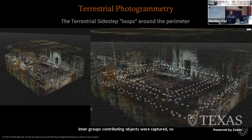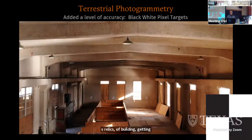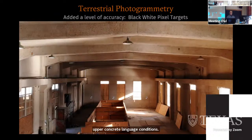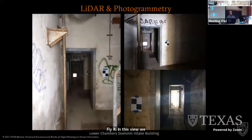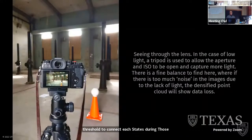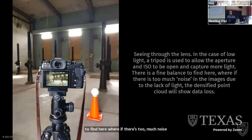Black pixel targets are used in 3D laser scanning and aerial and terrestrial photogrammetry to add accuracy. Seeing through the eyes of the drone, flying very close to the ceiling captured upper concrete ledge conditions not reachable by DSLR or laser scanner — when you cannot reach it, fly it. In the lower chambers of the Seaholm building, black pixel targets are placed at each threshold to connect spaces during processing. A low-light tripod allows the aperture and ISO to open and capture more light — too much noise from low light causes data loss in the densified point cloud. If the lens cannot see it, it cannot be modeled.